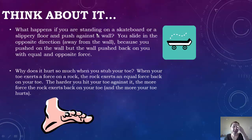For an example, when you're standing on a skateboard or on a slippery floor, if you push against the wall, you slide in the opposite direction, which would be away from the wall. Your toe exerts a force on a rock — or more commonly the corner of the bed or any corner in your house. Whatever you stub your toe on exerts an equal force back on your toe.